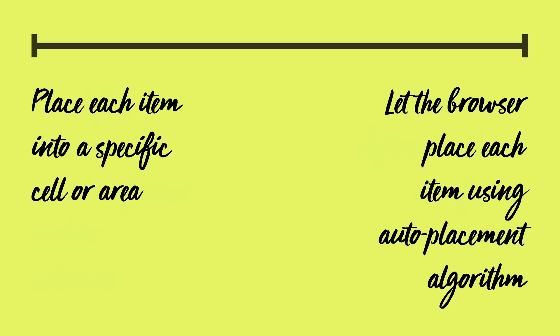You can also place things explicitly into particular cells or particular areas, or you can say nothing and the browser will decide where to put things. It will implicitly place things onto the grid according to the rules of the Grid auto-placement algorithm, which is a whole thing you'll learn all about. It's kind of one of our new best friends. If you don't do anything, instead of stacking all the content into a giant useless pile, Grid automatically places things one in each cell all the way along, and sometimes that's all you want.